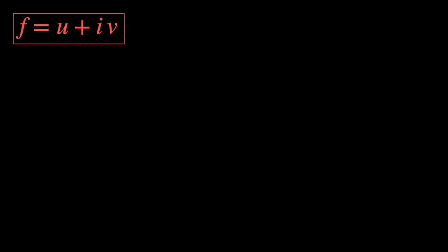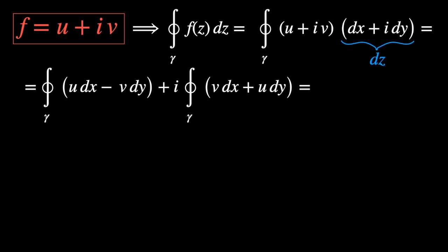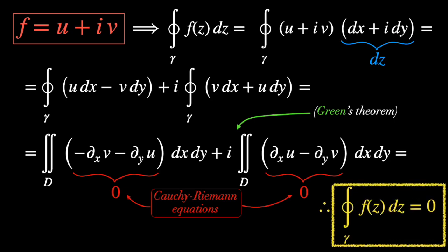Now we can finally use Green's theorem and the Cauchy-Riemann equations to prove Cauchy's theorem. To remind you, we're trying to prove that for any holomorphic function f in the region D inside gamma, the line integral is zero. Since f is a complex function, we split it into real and imaginary parts U plus iV, and write the line integral over gamma of f(z) accordingly. Working on the terms, we split into real and imaginary parts, then use Green's theorem to rewrite from a line integral to a double integral over region D. We see that we have exactly the Cauchy-Riemann equations inside each integral, so they are just zero. Therefore the line integral of f(z) along gamma must be zero — exactly what we wanted to prove.